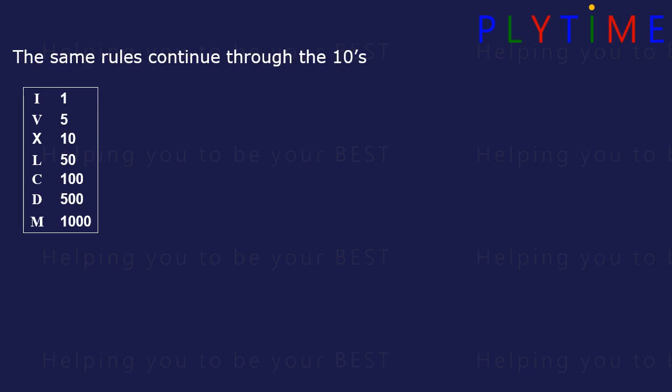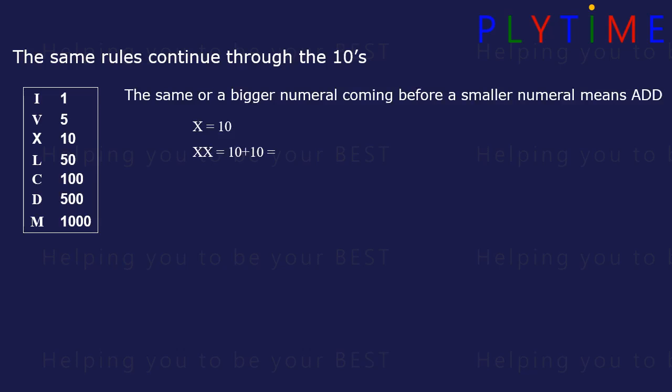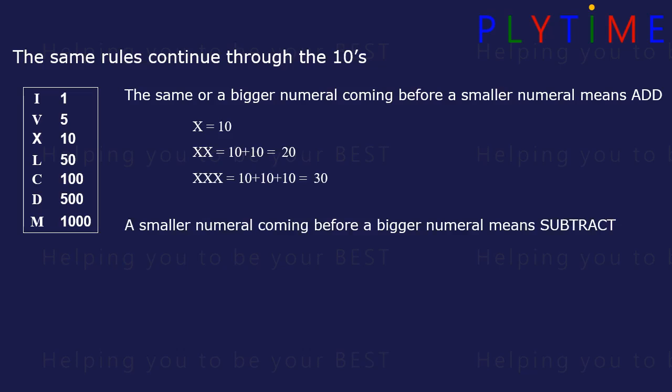The same rules continue through the tens. The same or bigger numeral coming before a smaller numeral means add. X on its own is 10. XX is 10 plus 10, which is 20. XXX is 30. A smaller numeral before a bigger numeral means subtract.